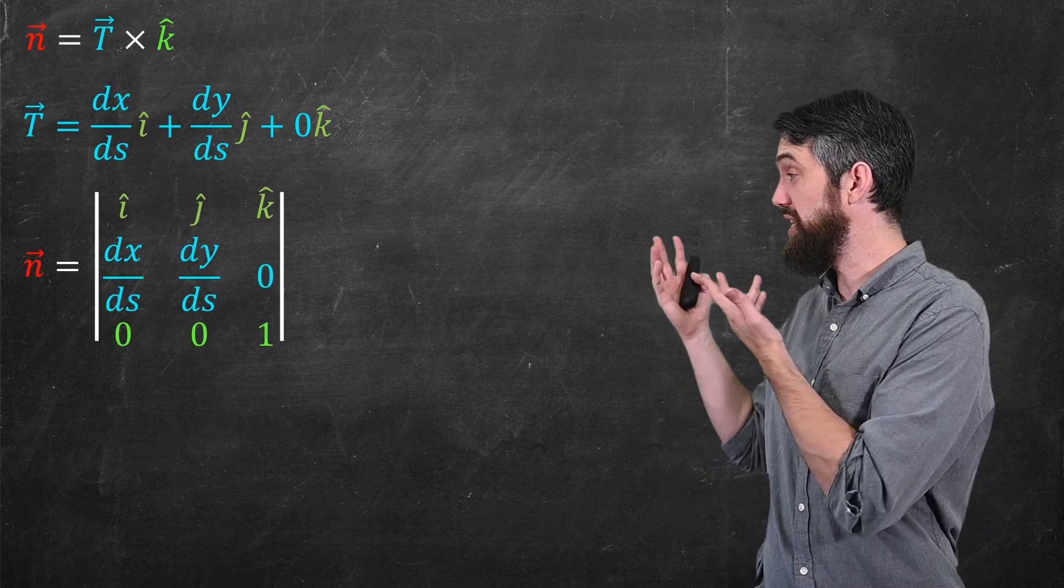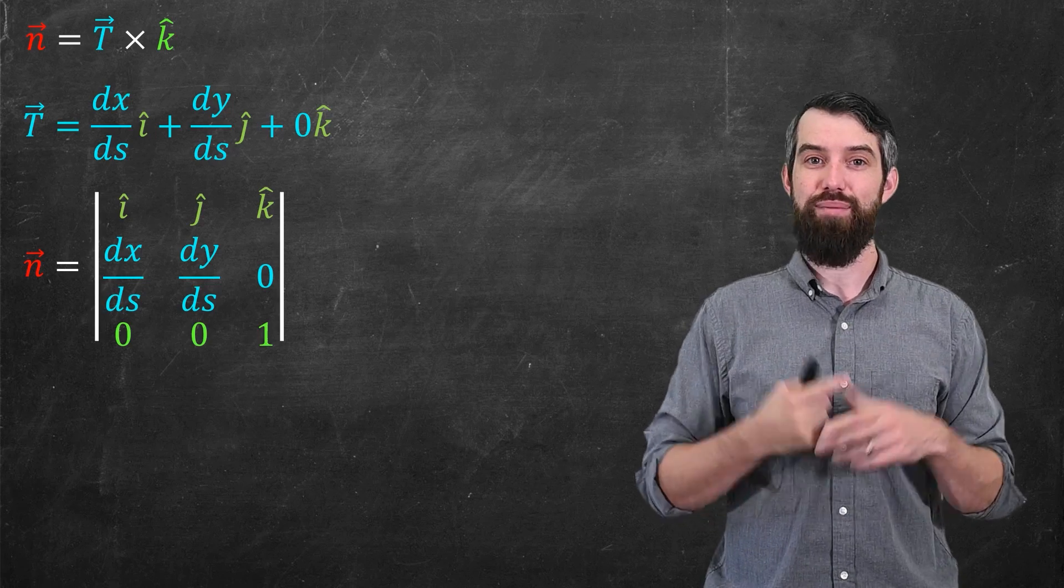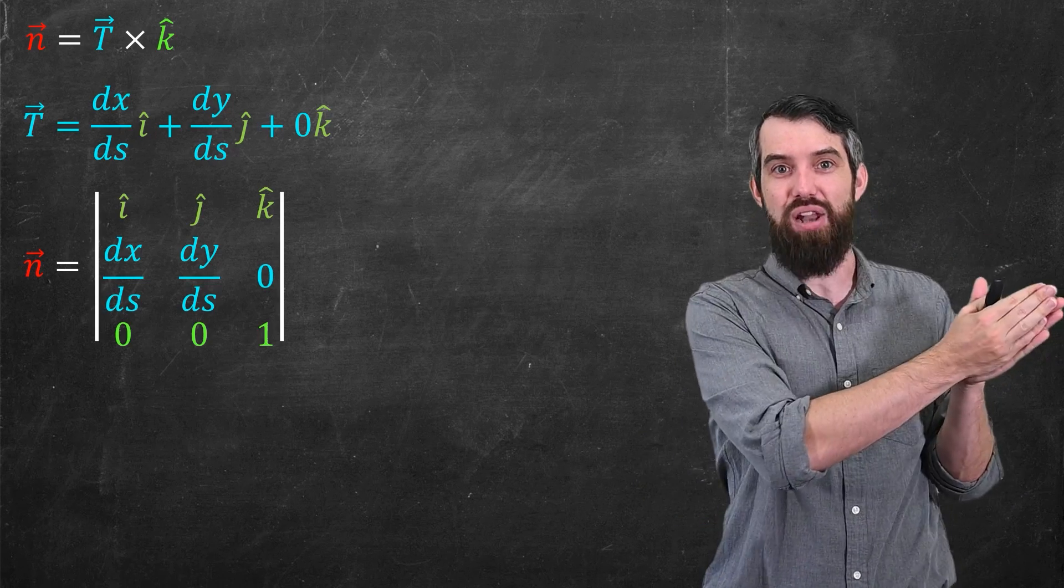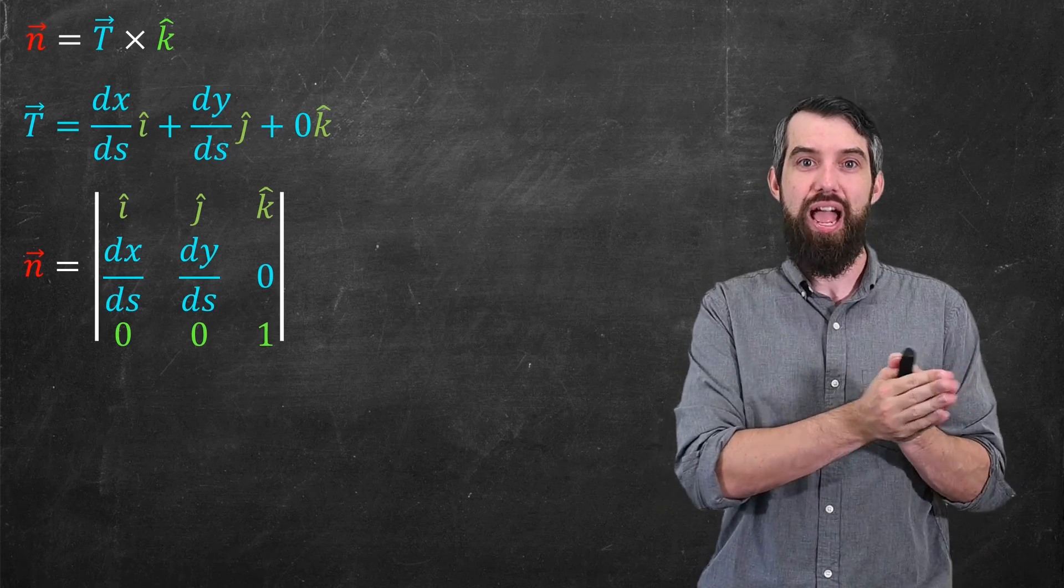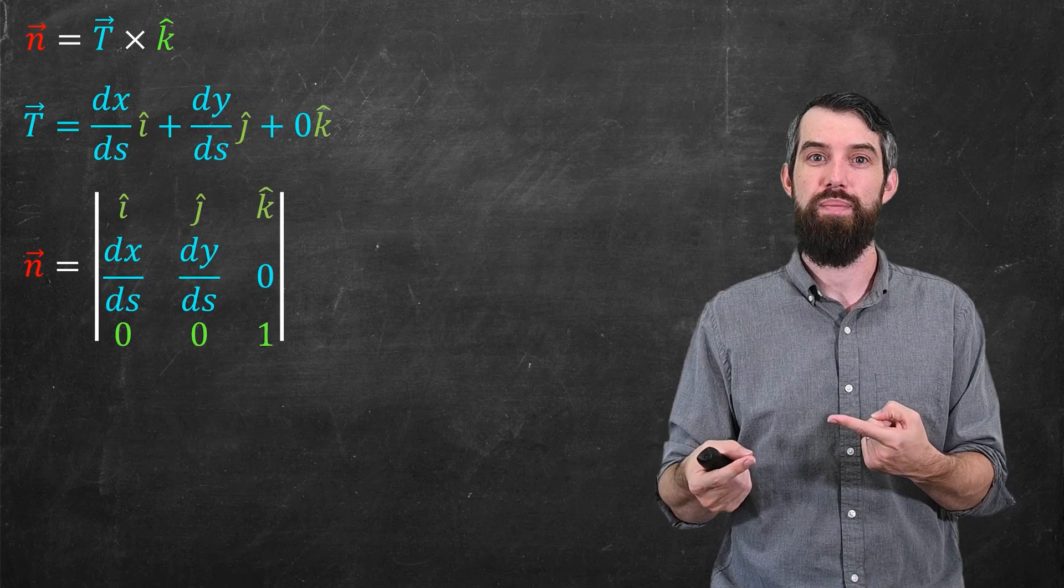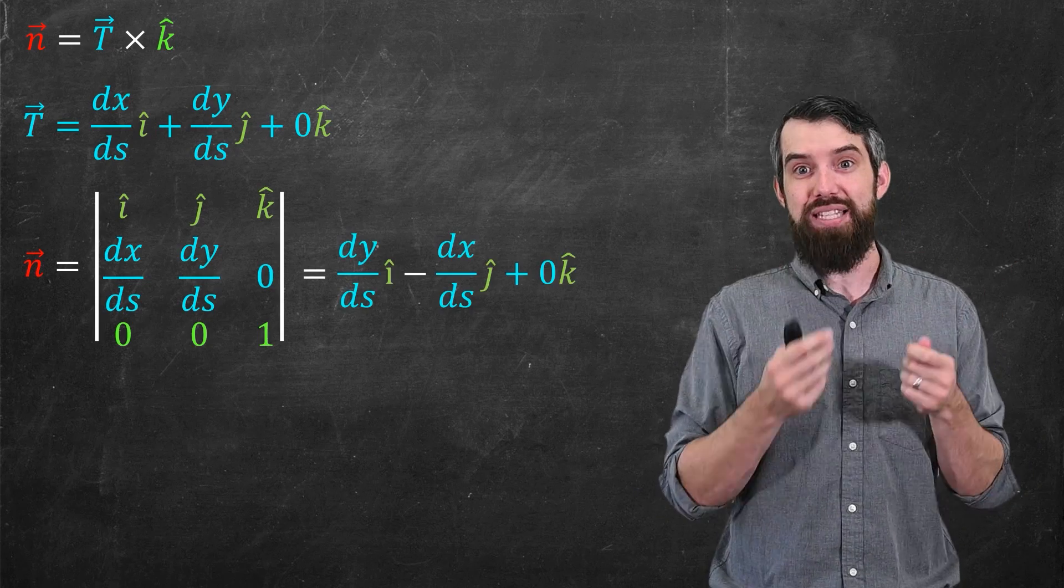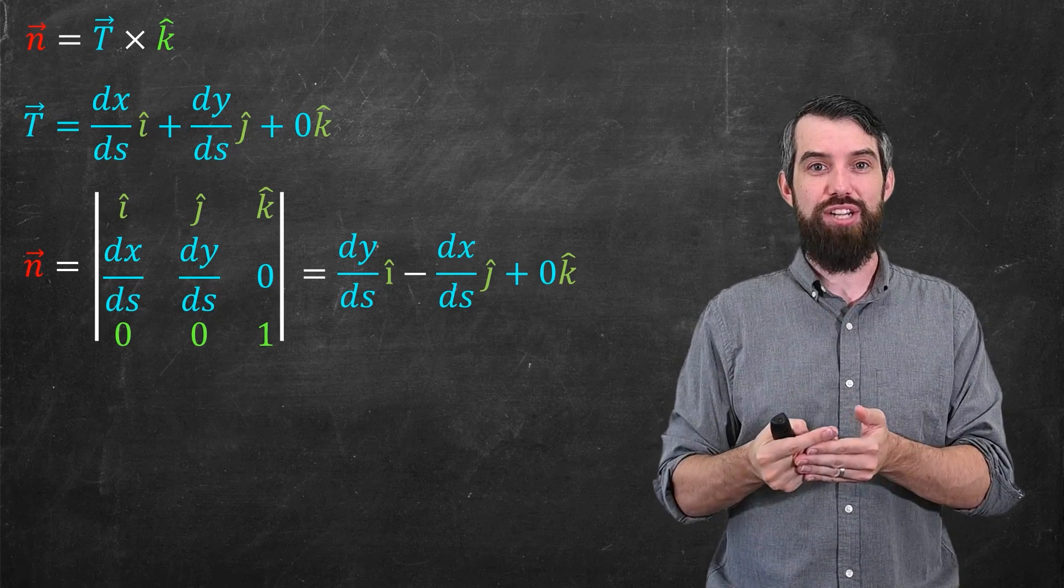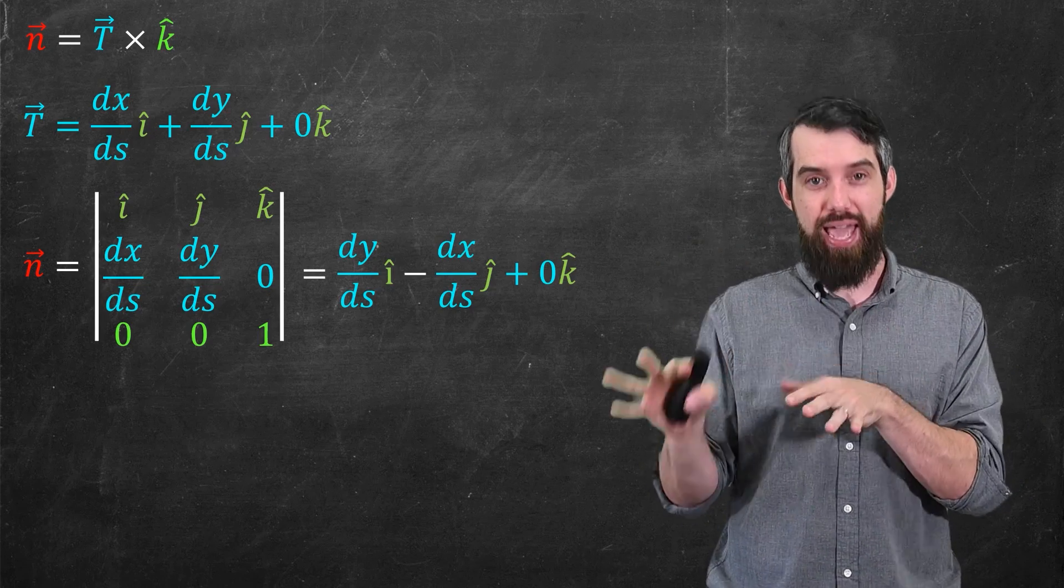All right, so we've got a cross product. Let's go and do the determinant trick here. So I'm going to say my normal vector is, and I'm going to take this determinant where I write the i-hat, j-hat, k-hat along the top, and then I write the t-vector, and then I write the k-hat vector along the bottom. That's why I got the zero, zero, one along the bottom. Compute out this determinant, and you get dy/ds in the i-hat direction minus dx/ds in the j-hat direction, and zero for the k-hat.